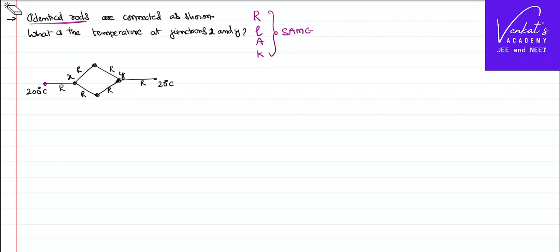It is given that there are multiple rods. You can see how many rods are there: 1, 2, 3, 4, 5—there are 6 rods. Temperatures are given for you. At one end, temperature is given as 20. At the other end, temperature is given as 200. That means heat obviously flows from place of higher temperature to lower temperature. So heat flows from left to right.